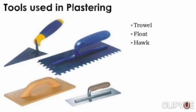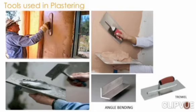The tools which are actually used in plastering are: trowel, float, and hawk. The picture indicates the tools which are used in plastering.